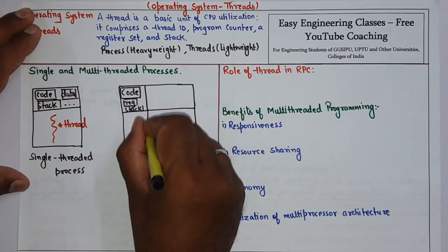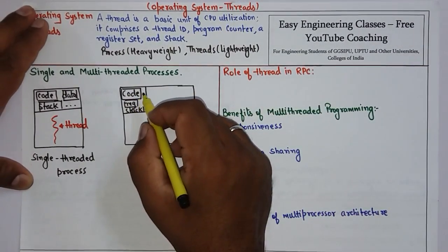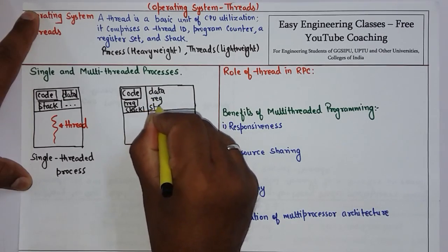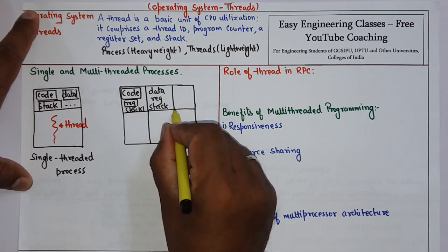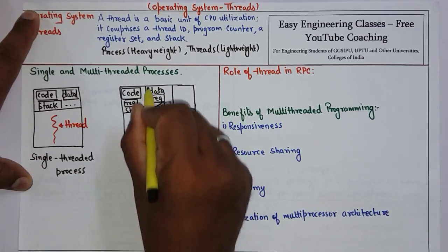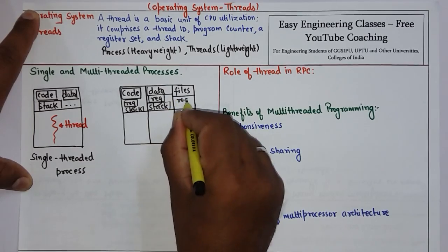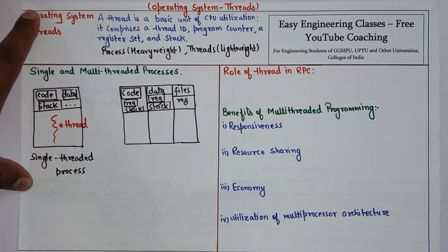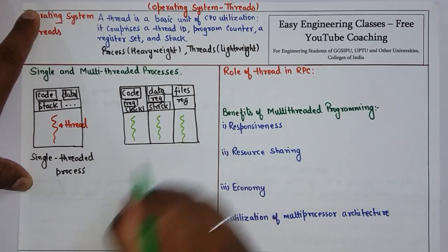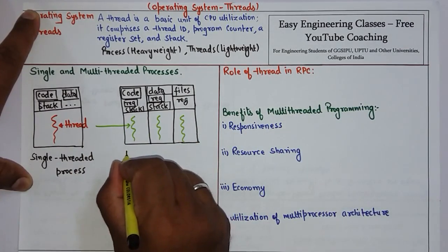For example, if one thread requires only the code along with register and stack, then this thread will get access to those resources. Similarly, if another thread requires data, register, and stack, then this thread will get access to these. The register and stack resources are shared. If one thread requires files and register only, those resources are also shared. So for each section we have a different thread — that is your multi-threaded process.